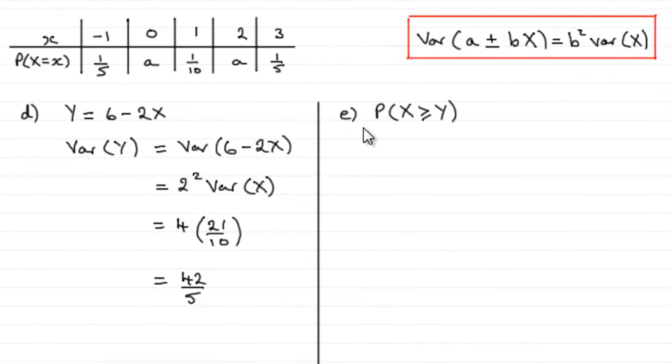Now in the last part, part E, we've got to work out the probability that the random variable X is greater than or equal to the random variable Y.